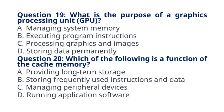Question 20: Which of the following is a function of cache memory? A. Providing long-term storage, B. Storing frequently used instructions and data, C. Managing peripheral devices, D. Running application software. The correct answer to question 20 is option B: Storing frequently used instructions and data. Explanation: Cache memory stores frequently used instructions and data to speed up access times for the CPU.